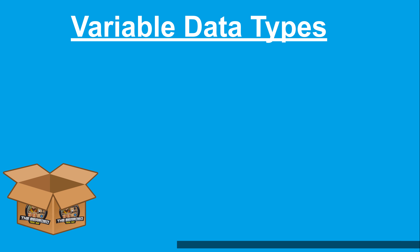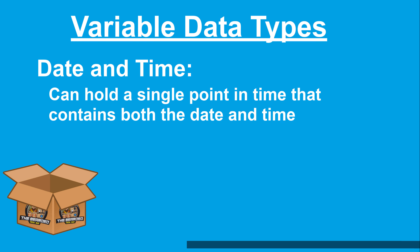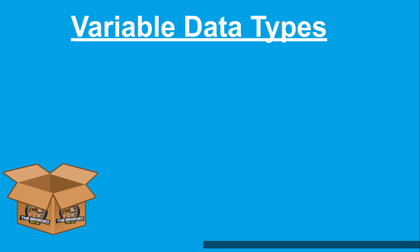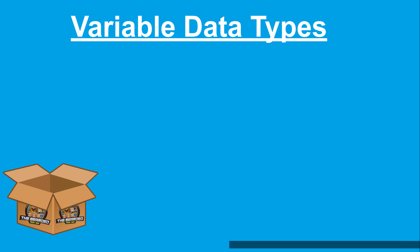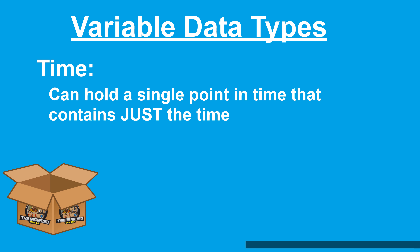The next variable data type is date and time. This variable can hold a single point in time that contains both a date and time, such as what is on the screen right now. The sixth variable data type is date, which is similar to date and time except it will only hold the date. The seventh variable type is time, which can hold a single point in time but only the time portion of that point.